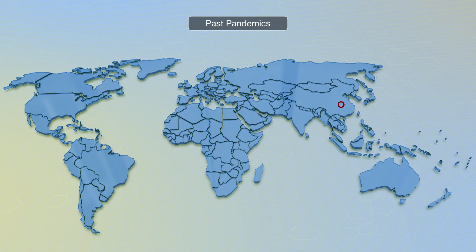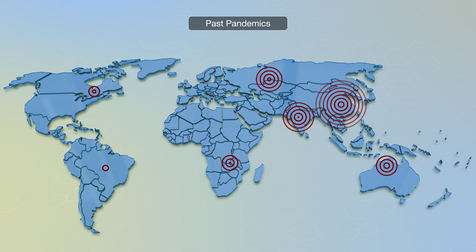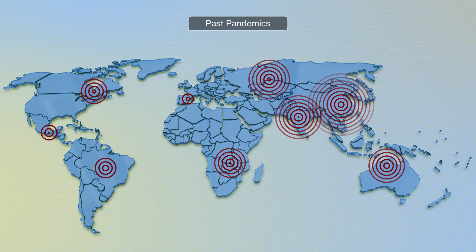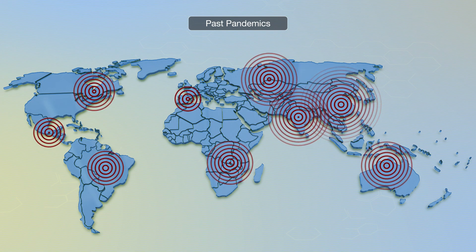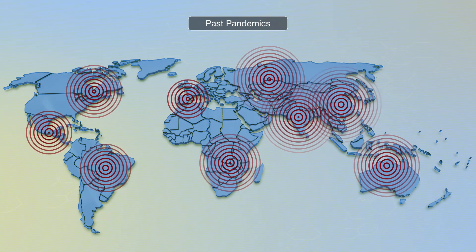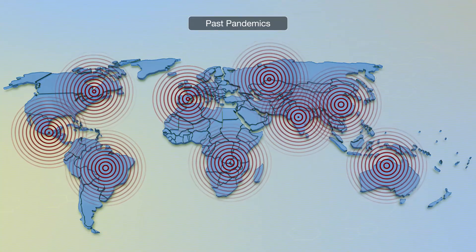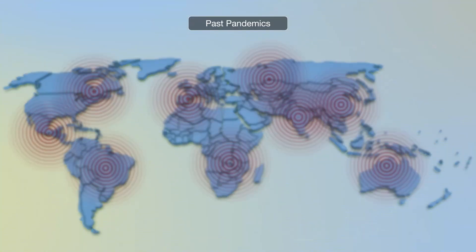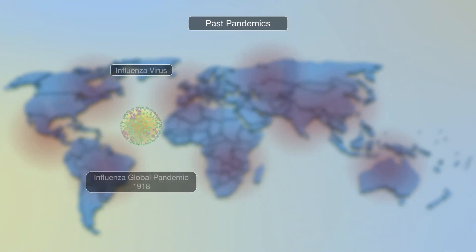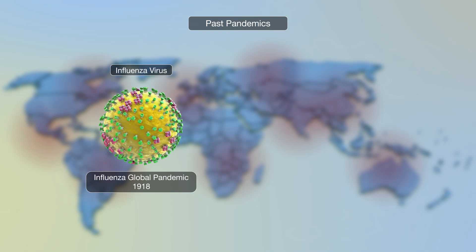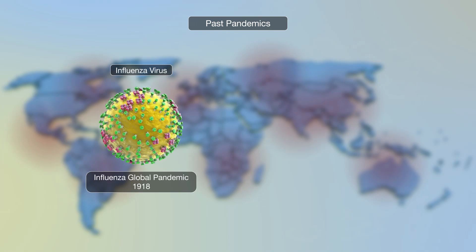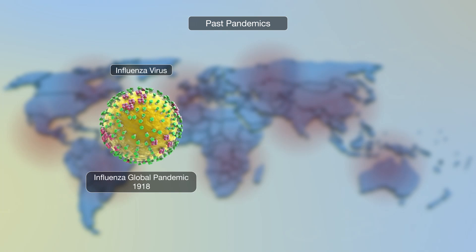Pandemics indicate outbreaks of disease that spread to cover an entire region or the world. A pandemic can result in massive loss of life. In the last 100 years, there have been four global pandemics, the worst being the 1918 influenza pandemic, resulting in an estimated 50 to 100 million deaths.